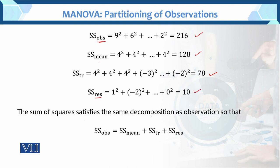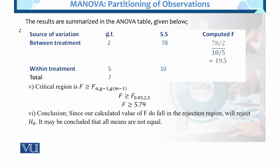The sum of squares satisfies the same decomposition as the observations: SS observations = SS mean + SS treatment + SS residuals. The results are summarized in the ANOVA table, which has source of variation, degree of freedom, sum of squares, and F.